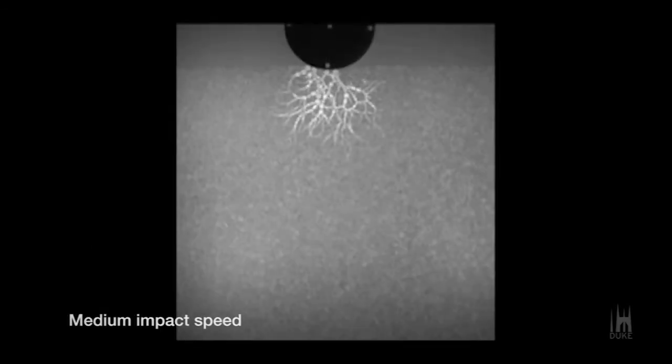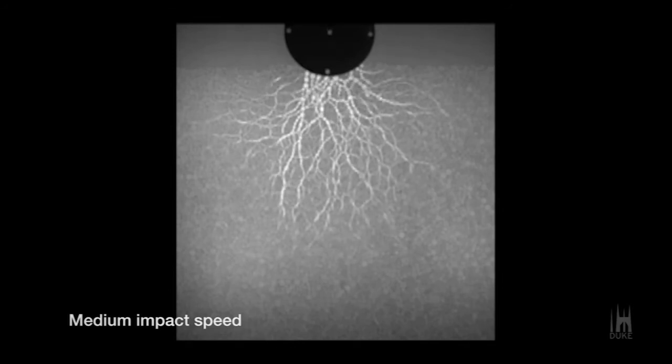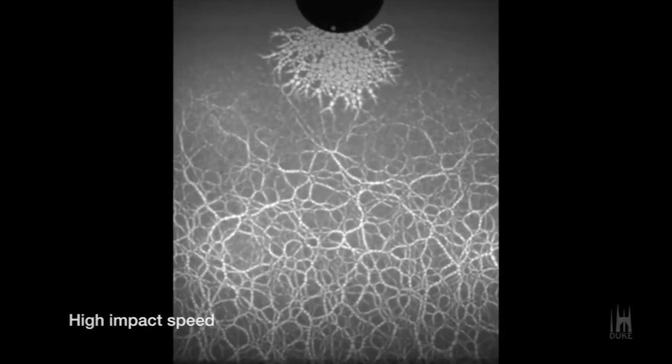Viewed through a filter, the collision creates branching chains of light that travel between the beads and show resistance to the impact at different speeds.